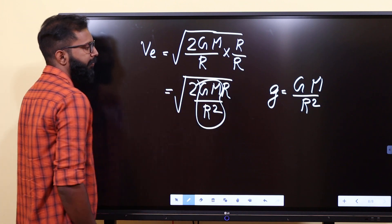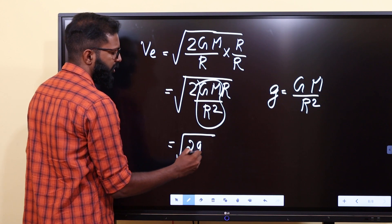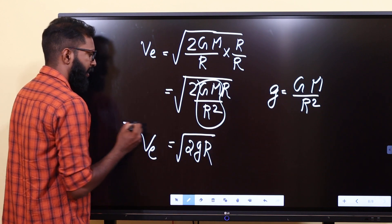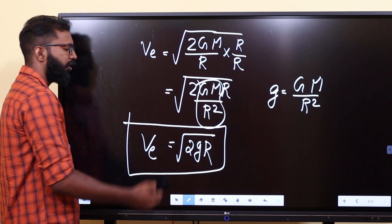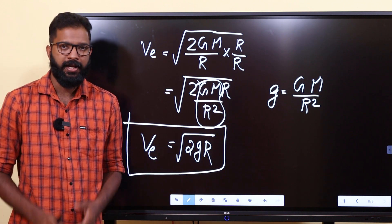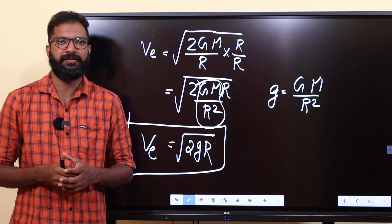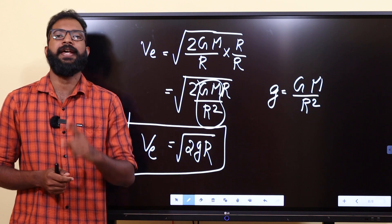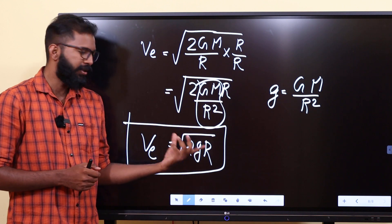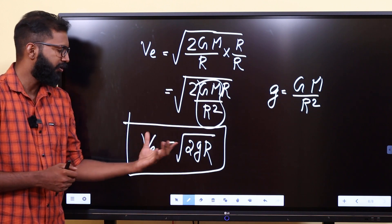That gives us VE = √(2gR). That is the expression for escape velocity, where g is acceleration due to gravity and R is the radius of Earth.